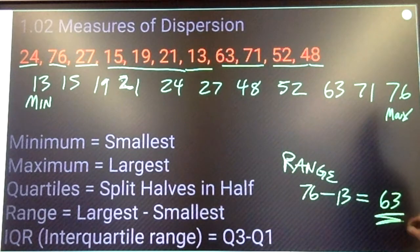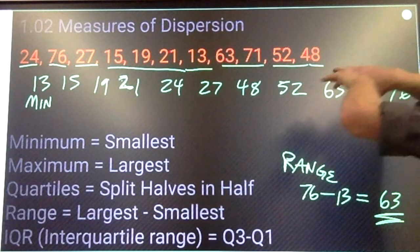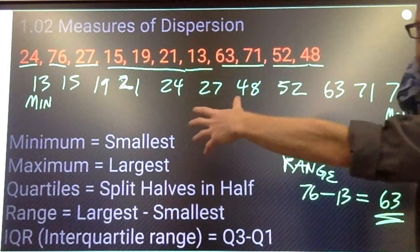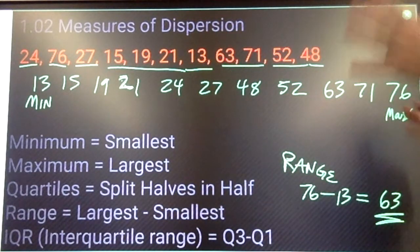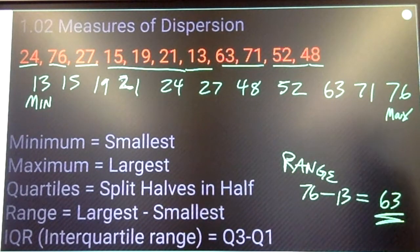Okay, that means that my data is spread across a distance of 63. That's what the range is. My data is spread across a distance of 63. It's 63 from the smallest to the largest number.